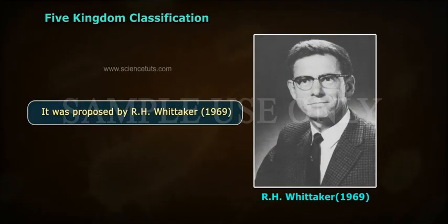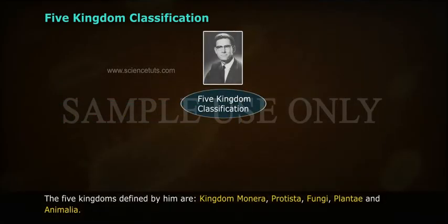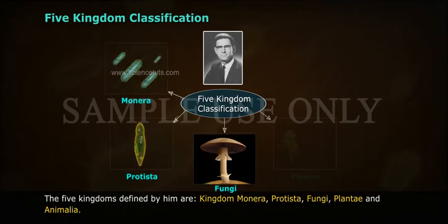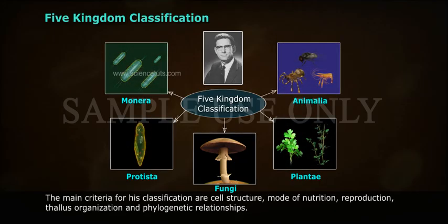Five Kingdom Classification was proposed by R.H. Whitaker in 1969. The five kingdoms defined by him are Kingdom Monera, Protista, Fungi, Plantae, and Animalia.